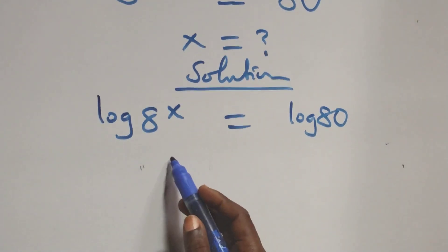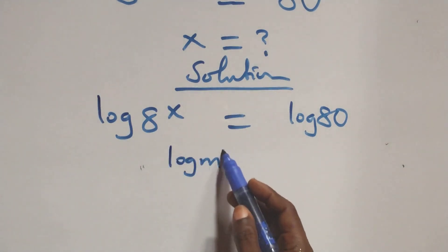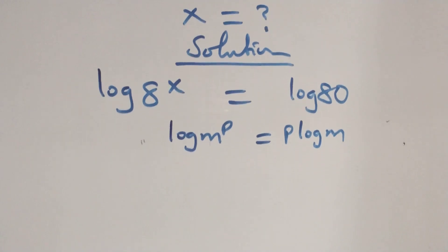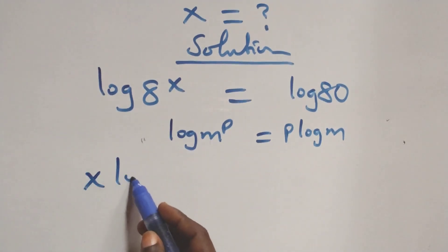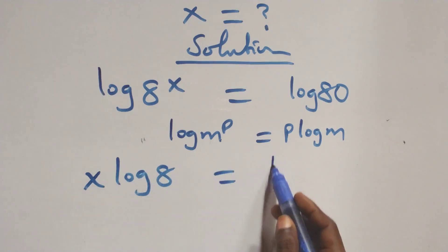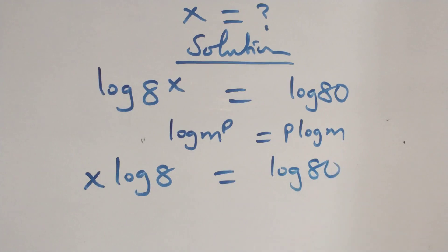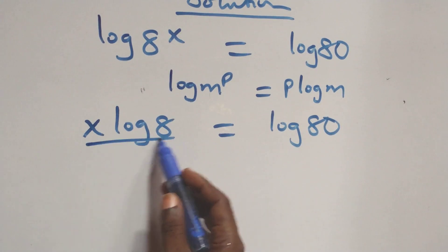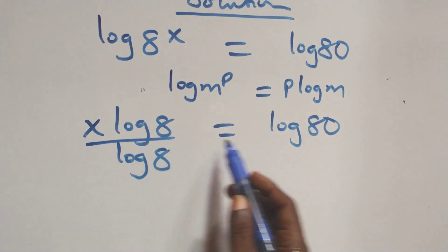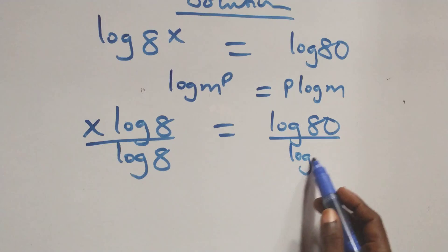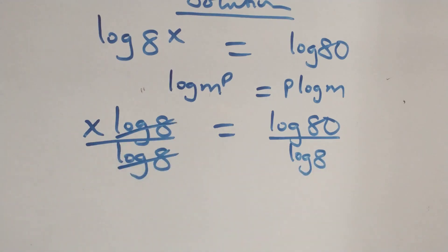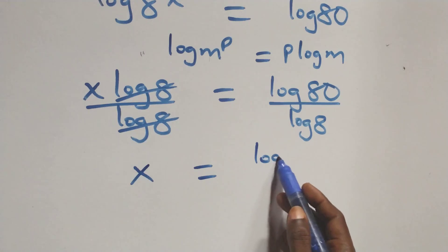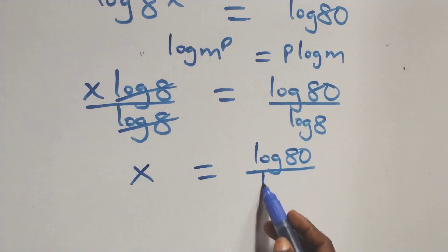We apply the power rule of logarithms, where log(m^p) equals p·log(m). This becomes x·log(8) = log(80). Next, we divide both sides by log(8) — log(8) cancels — giving us x = log(80)/log(8).